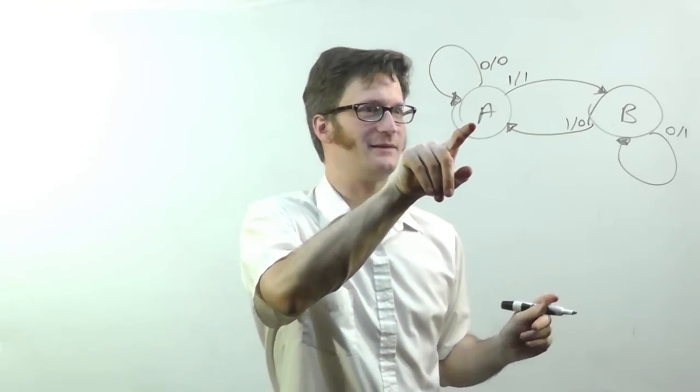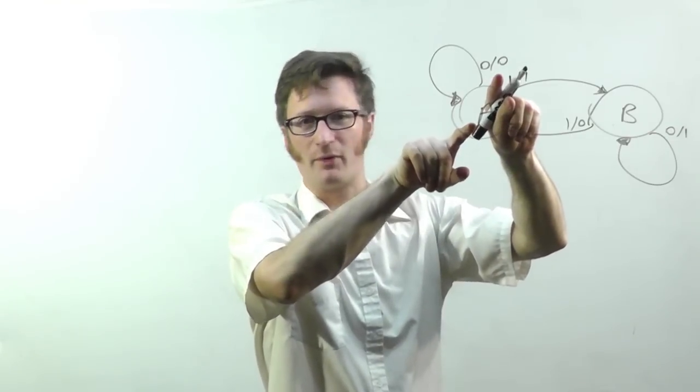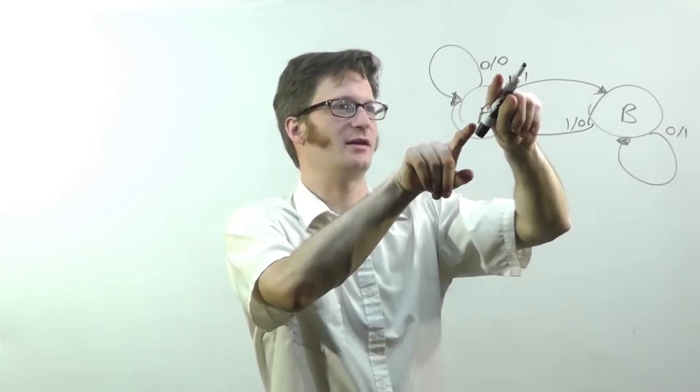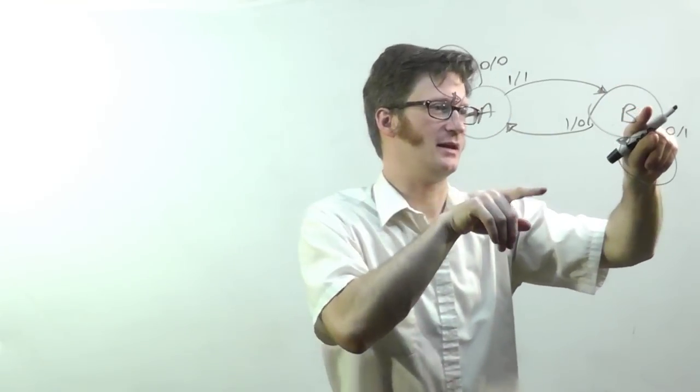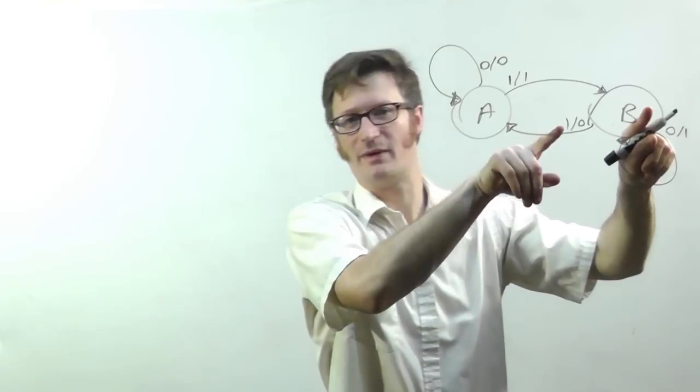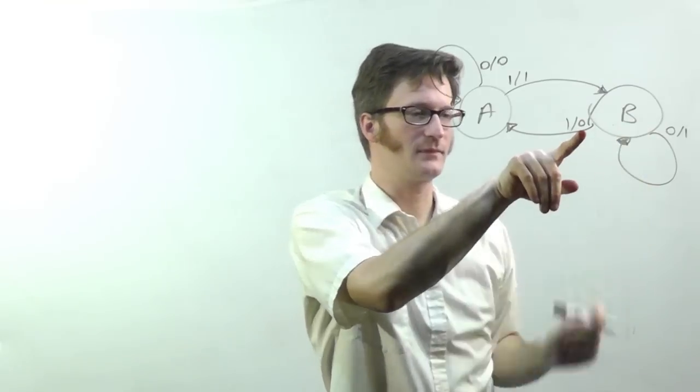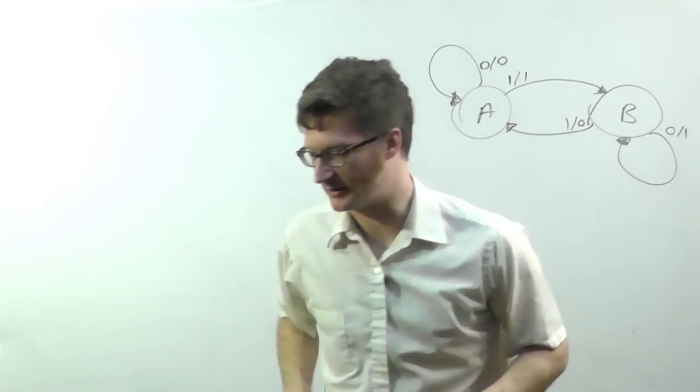So, if I'm in state A, my input is one, my output will remain one until that clock pulse comes. At which case, I jump over to B. If my input is one when I'm in B, then my output will be zero until the clock pulse comes and then I jump back over to A.